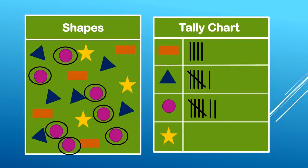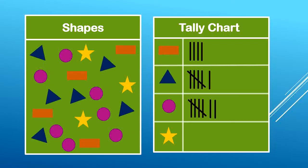Last on our list is the yellow star. Let's count how many yellow stars there are. One, two, three. That means just three tallies: one, two, three.